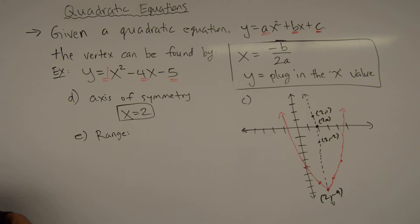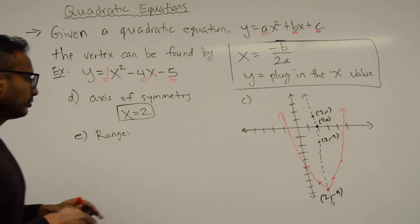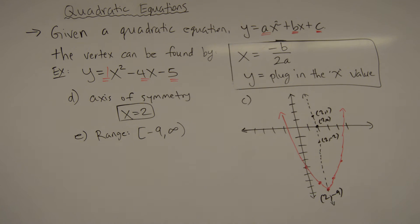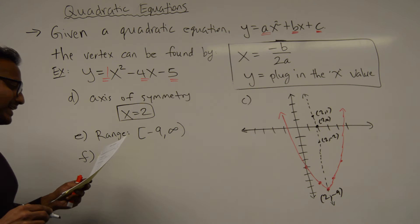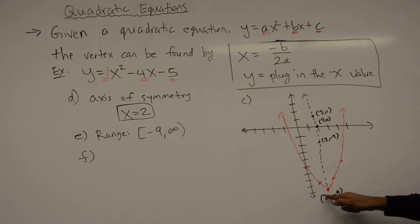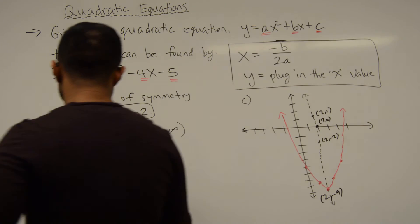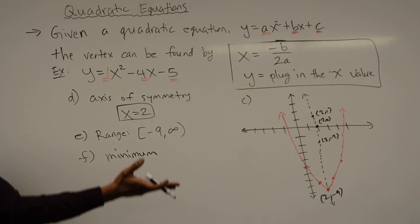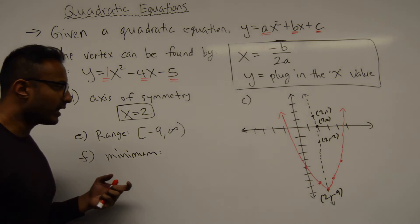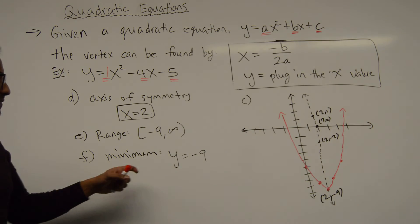For part e, the range refers to the y-values. The lowest y-value is -9 and it goes to infinity, so the range is [-9, ∞). For part f, we find the maximum or minimum value. Because this graph opens upward, (2, -9) is the lowest point, so it has a minimum value. When we talk about the minimum value we refer to the y-value, so the minimum value is y = -9.